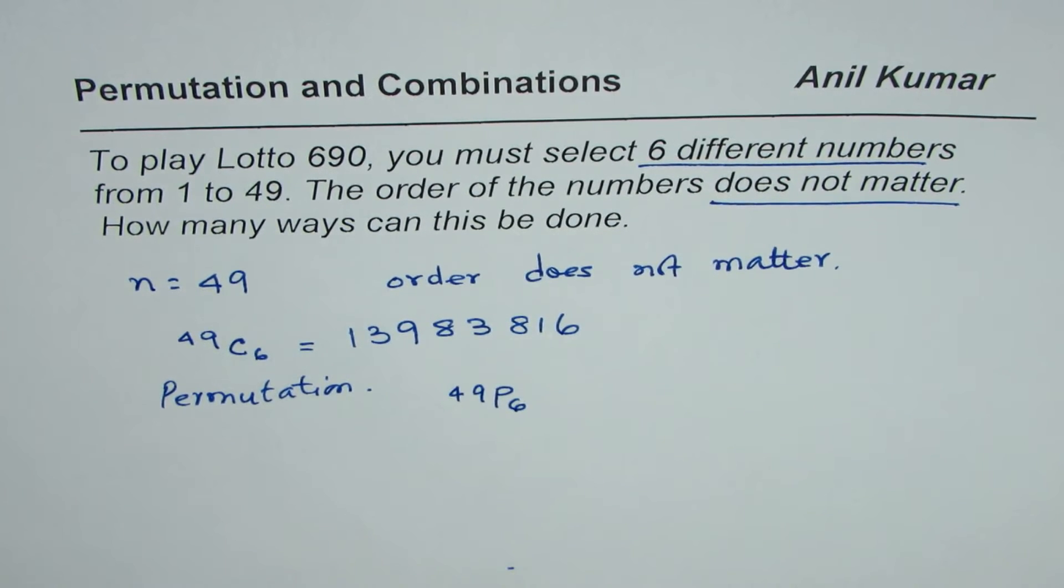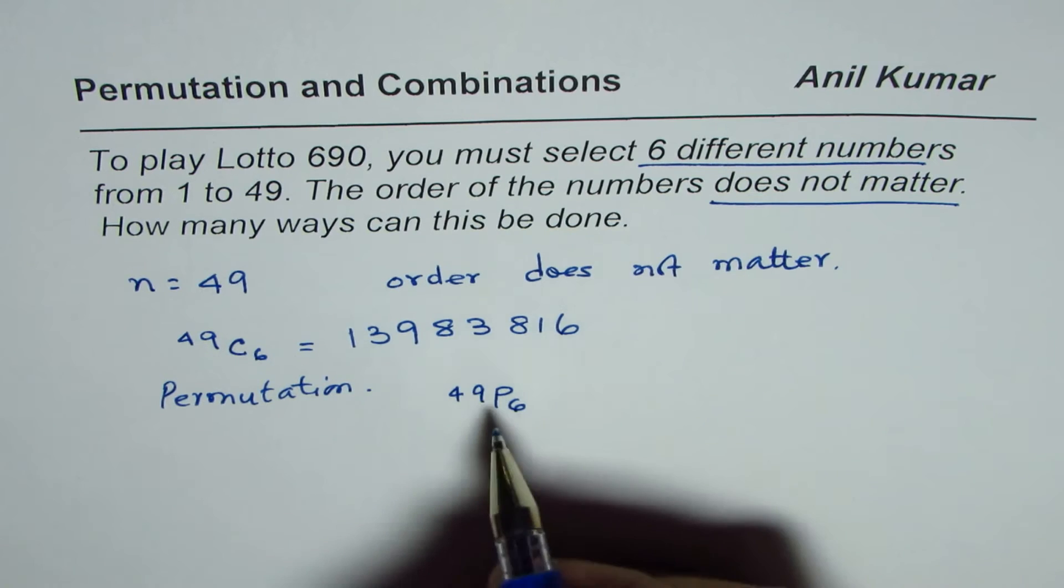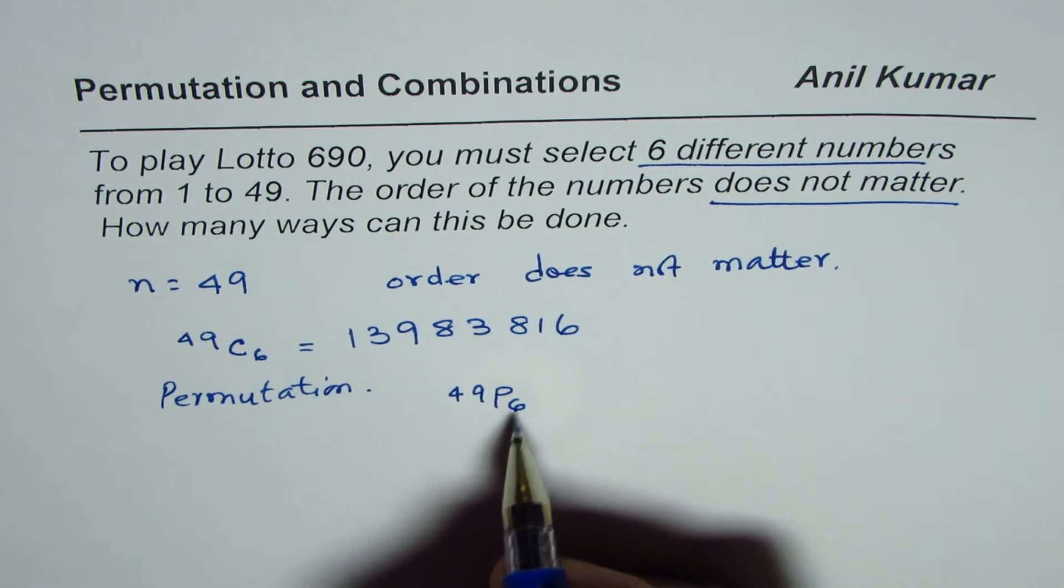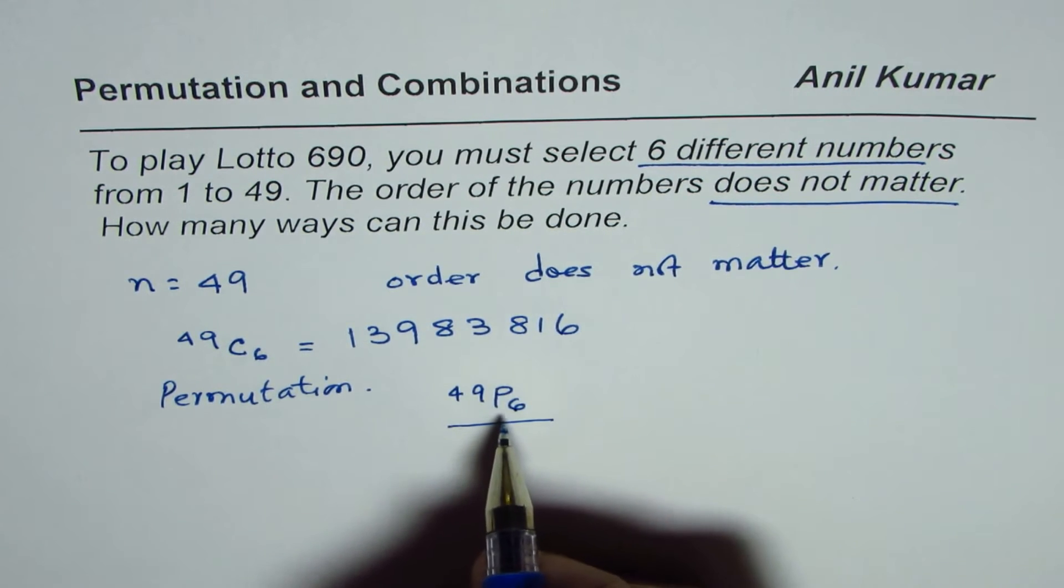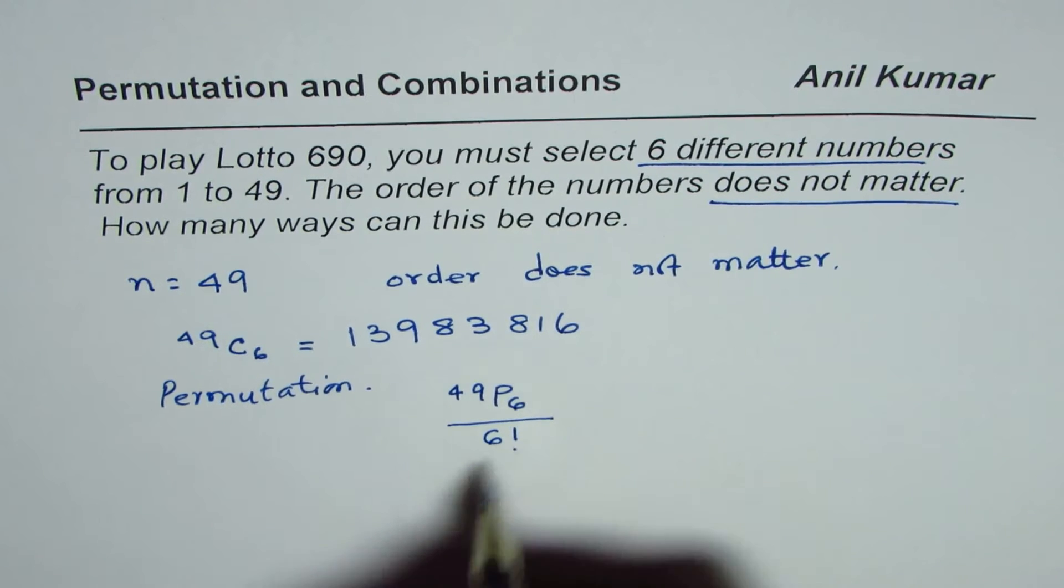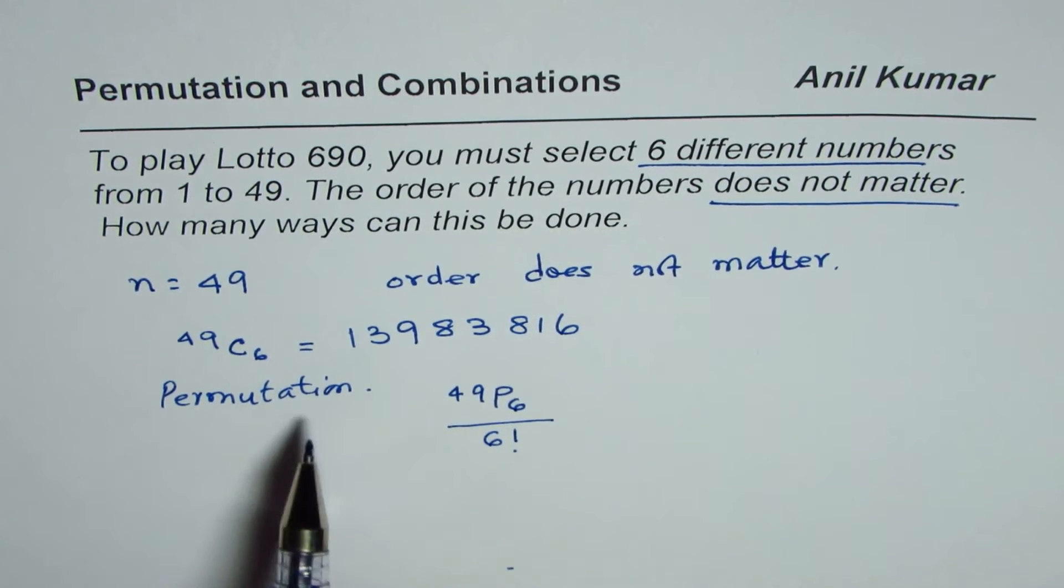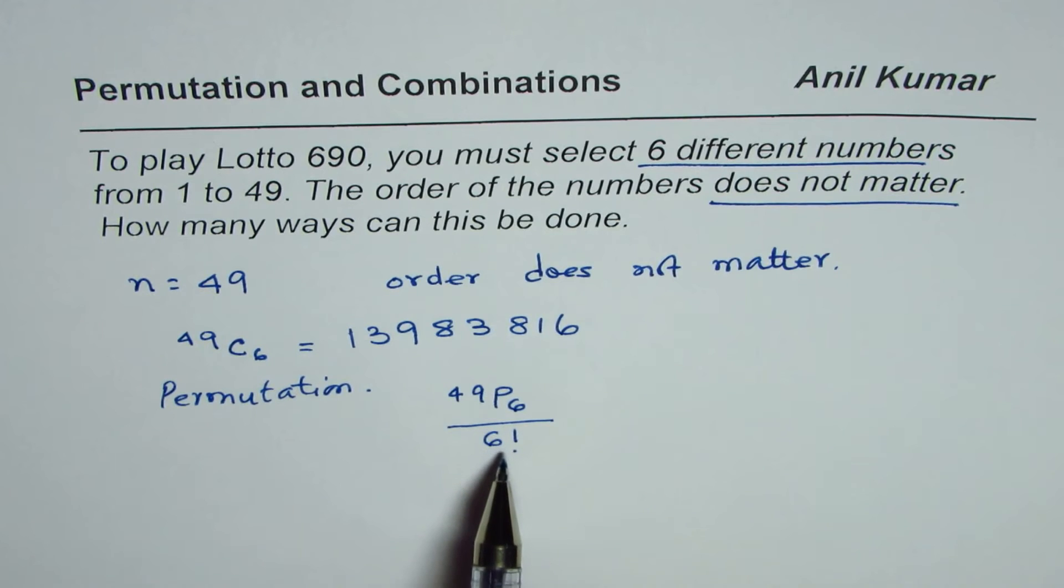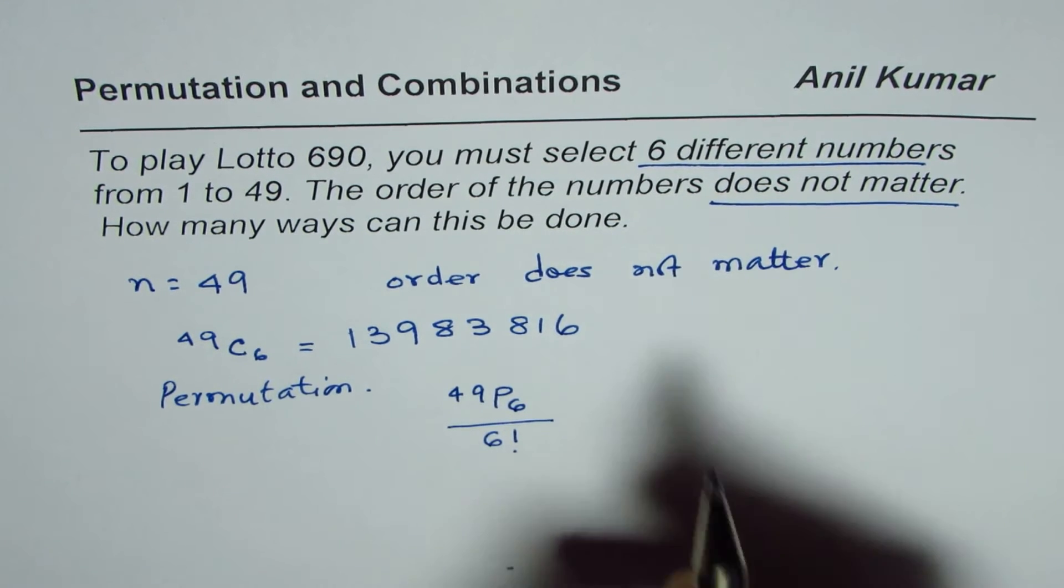So, since the order does not matter, the 6 which are selected could be arranged in 6 factorial ways. And therefore, we could use permutation and write the number of ways as 49P6 divided by 6 factorial.